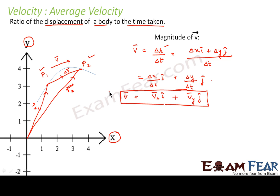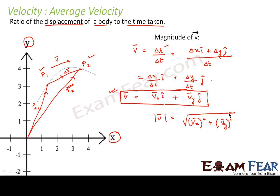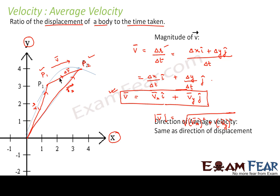This is how we denote average velocity in component form. The magnitude of average velocity is the square root of (vx squared plus vy squared), from our basic knowledge of vectors. Similarly, the direction of average velocity is the same as the direction of displacement, that is delta r.